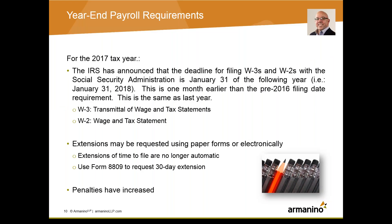Good morning, everybody. Let's begin with payroll and talk about what's changing. The good news is not as much as last year. Until 2017, employers had two dates to keep in mind when remitting W-2s: January 31st to provide employee copies, and February 28th for paper filings submitted to the Social Security Administration, or March 31st for electronic filings. This year, both the electronic filing and the paper filings are due by January 31st, 2018.